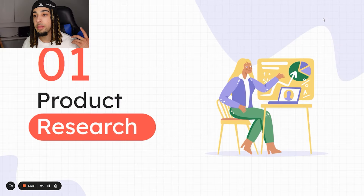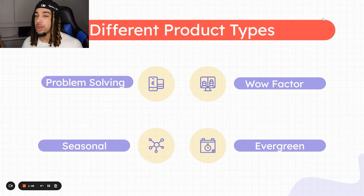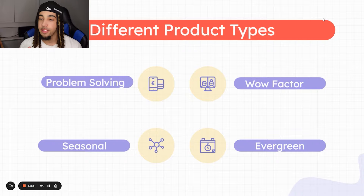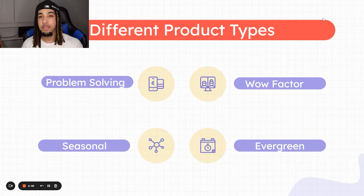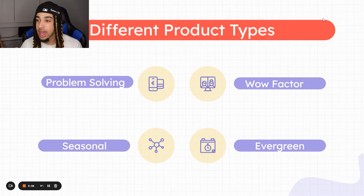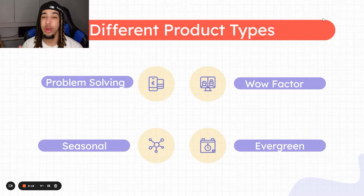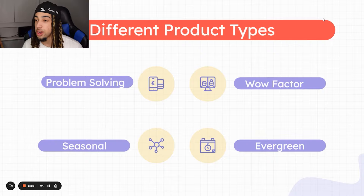A lot of people tend to overthink the product research process because they don't know the different types of products they can actually go out and sell. I broke this down into four different sections: problem-solving, wow factor, seasonal, and evergreen. Everything in the top section — problem-solving and wow factor — has to be paired up with one of the things in the lower section — seasonal or evergreen. This is literally the formula that's been able to generate me six and seven figures with Shopify dropshipping.